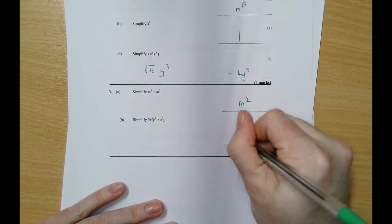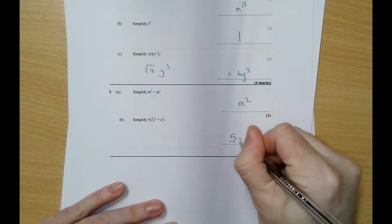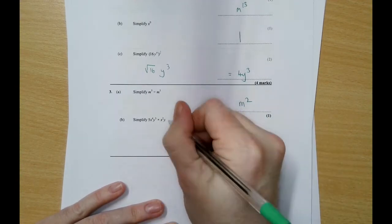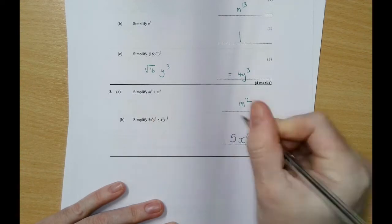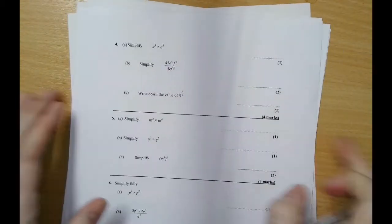With this one here, 5 times no number here, there is a number really, it's 1. 5 times 1 is going to be 5, so the numbers deal with the numbers. x to the power of 4 times x squared would be x to the power of 6. y cubed times by y is really y to the 1, so 3 add 1 would be y to the power of 4.